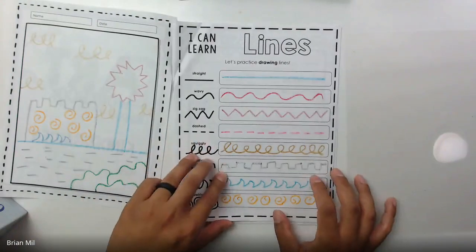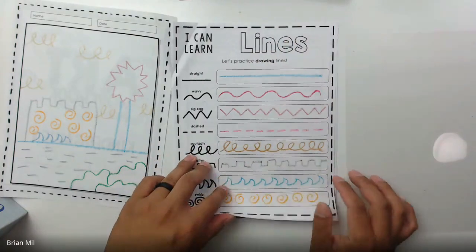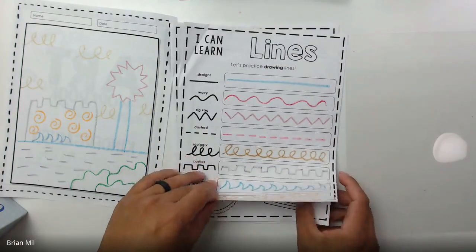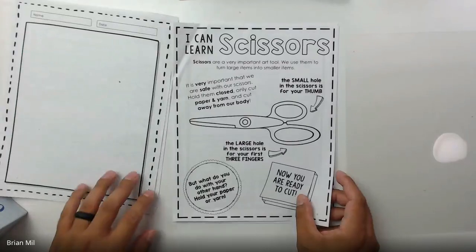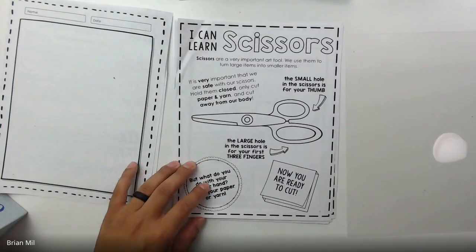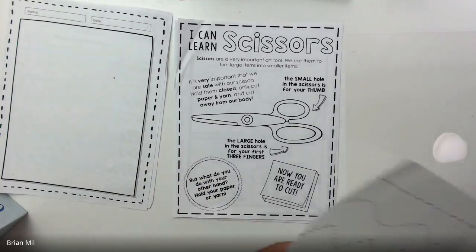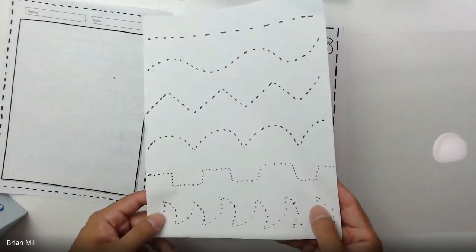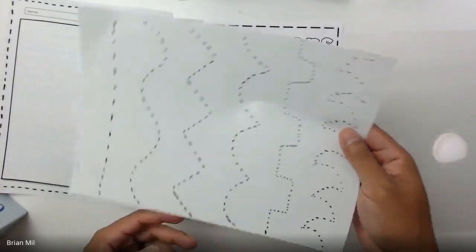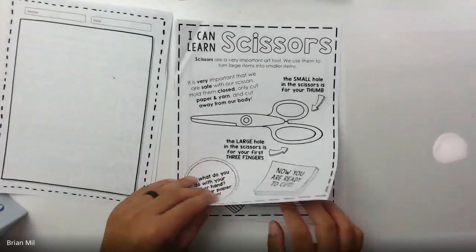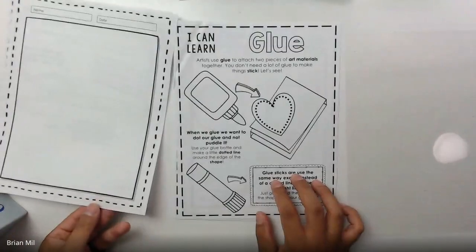So a couple weeks ago we went over line, which is great. You guys can turn the page. Last week we worked on scissors, so it was a page that looked like this before and then we cut it all up.